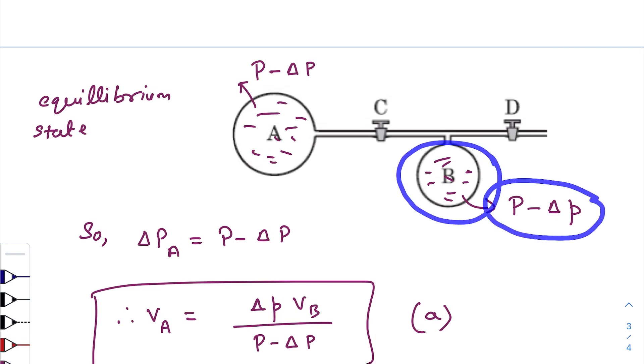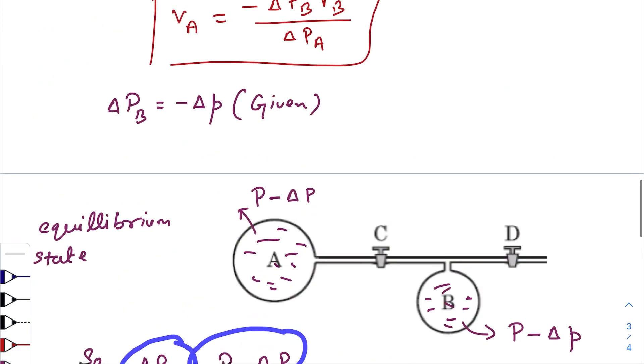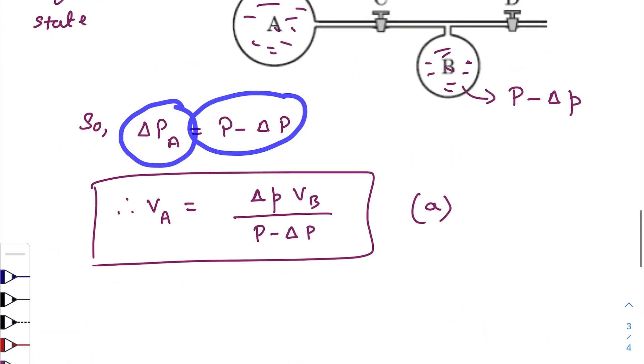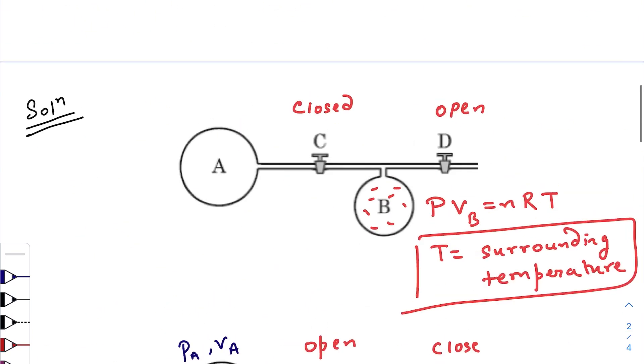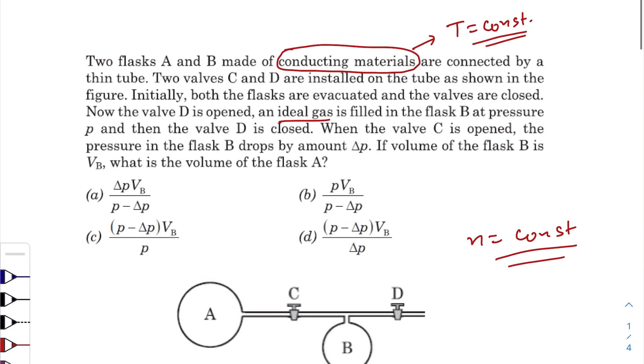So final pressure of flask B is P minus ΔP. Of course final pressure of flask A will also be P minus ΔP. So change in pressure of flask A is P minus ΔP. Just put the value in this equation, we will get the volume of flask A. So according to our question, option A is our correct answer.